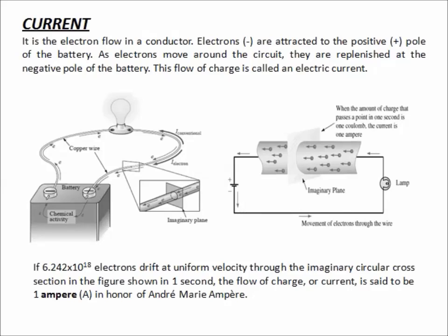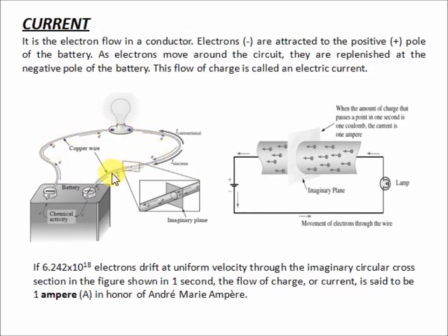Now, let us discuss current. The definition of current is it is the electron flow in a conductor. In this diagram, the electrons move in the conductor because the positive pole of the battery attracts those electrons. That is why they move in the conductor. So, the flow of electrons is called current.